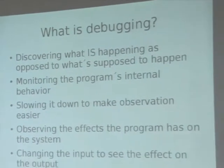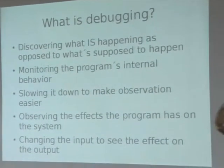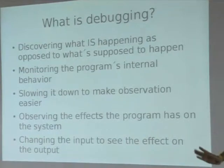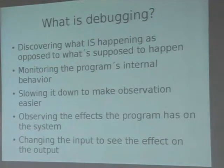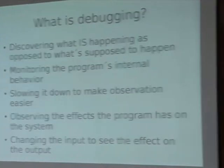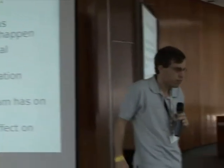The point of debugging is to know what's actually happening in your program rather than just what's supposed to happen. Everyone knows what's supposed to happen — it's meant to just work and do exactly what you want all the time. But unless you actually have an implementation of DWIM, that's not going to happen.